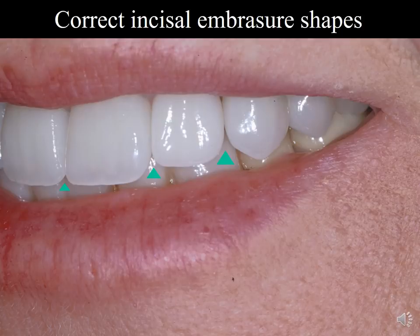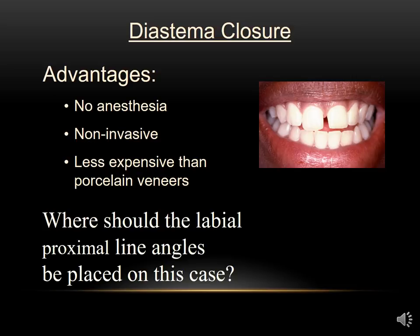This is the very first diastema closure that I did in my practice. Some of the advantages to using composite is that you don't need anesthesia. It's non-invasive — you're adding to the tooth, not taking anything away. And they would be less expensive than porcelain veneers. So the question is, where should the labial proximal line angles be placed in this case?